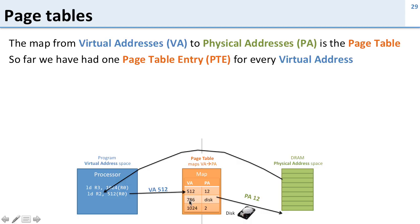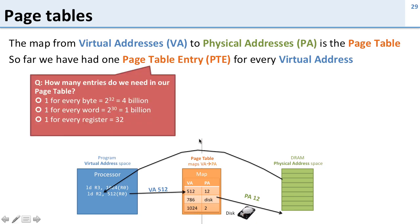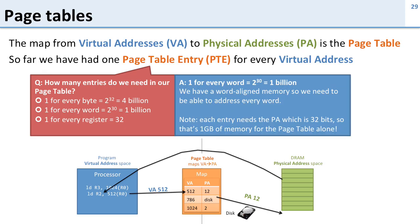So here we had one entry for address 512, one entry for 786, and we also had entries for all the words in between these as well. So how big is this? If we need one entry in our page table for every virtual address, and remember virtual addresses are word-accessed, how many do we need? We need one for every word, so that's 2 to the 30, or 1 billion entries. That means that this table, for a 32-bit program address space, has to be able to fit a billion entries in it.